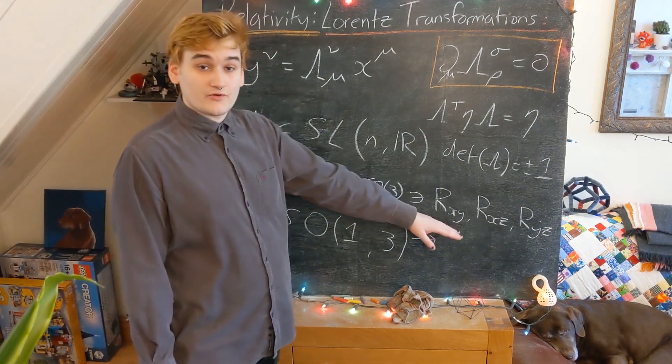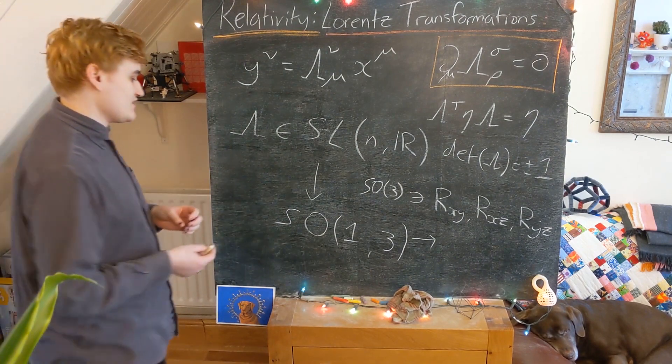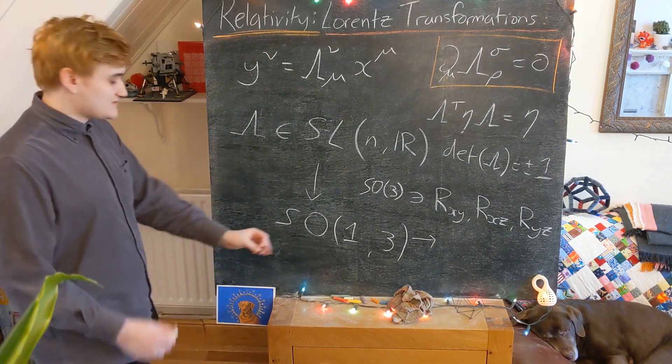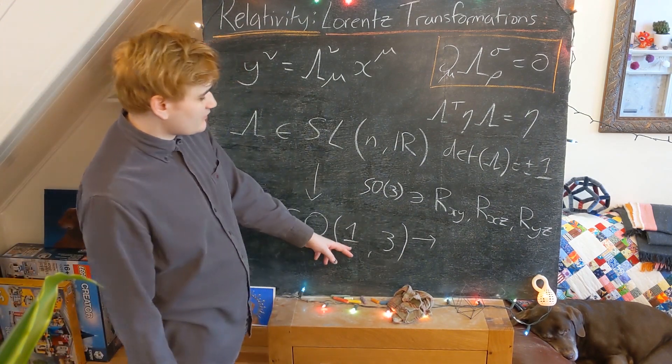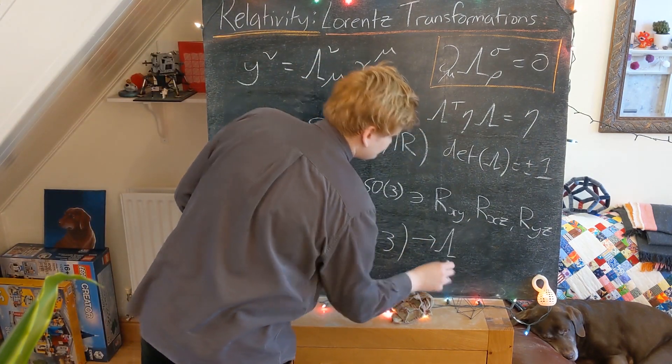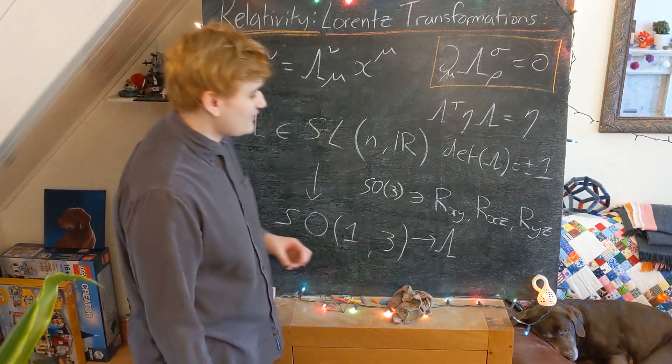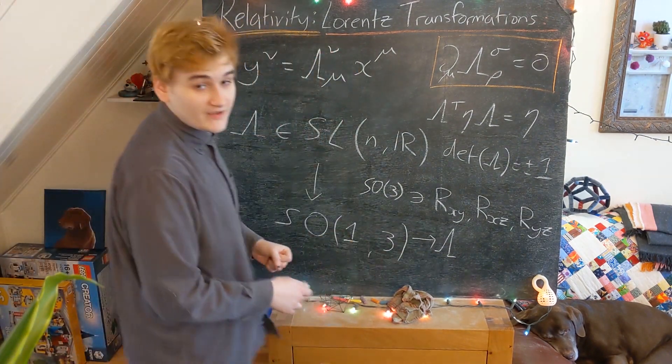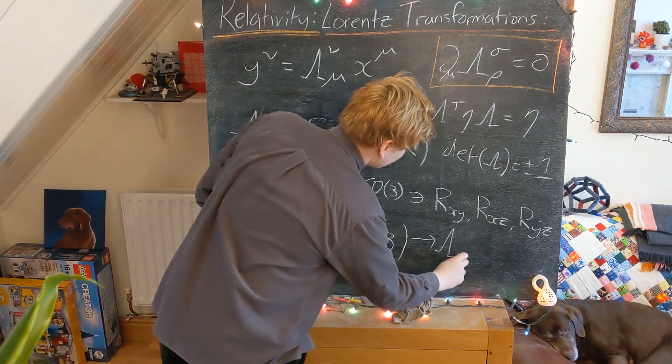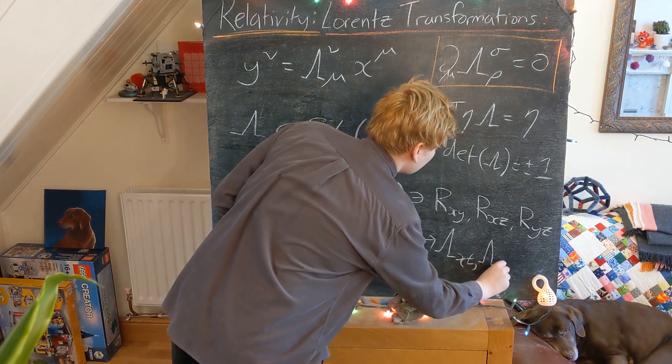But then in addition to our orthogonal rotations, we also found the new type of transformation, which is kind of looking similar to a rotation, but it's now a rotation that affects both a time and a space coordinate. And so we saw that these were the boosts, which we traditionally just call lambda.